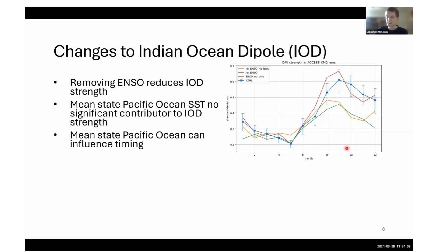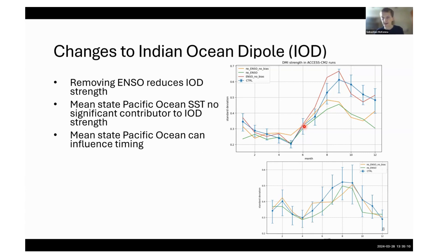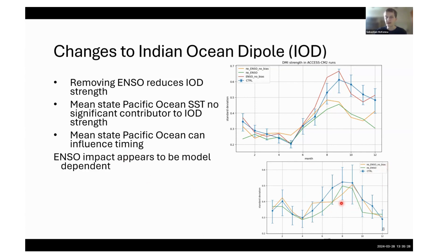However, it does change the timing slightly. In both of the no-bias cases — the orange line and the red line — the IOD typically starts happening a little bit earlier than when there is the bias. I also have experiments from another model, the French model SINTEX. It's not the exact same forcings or restoring, but they've got an experiment which restores over the Pacific, removes ENSO using a climatology, and one using the observed climatology. We see that the impact of ENSO seems kind of model dependent.